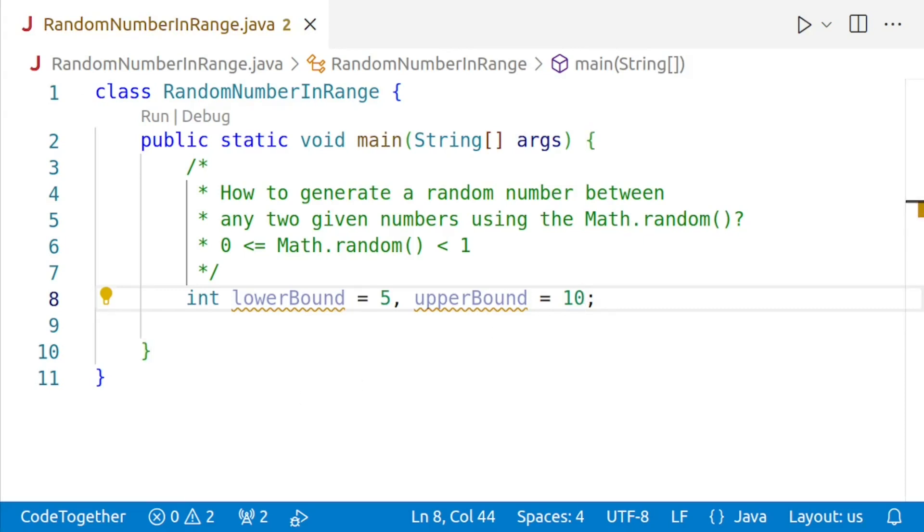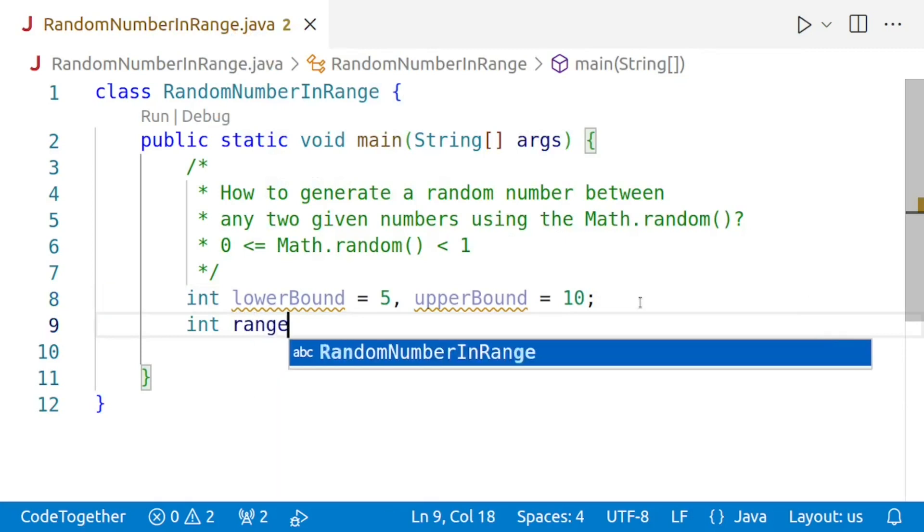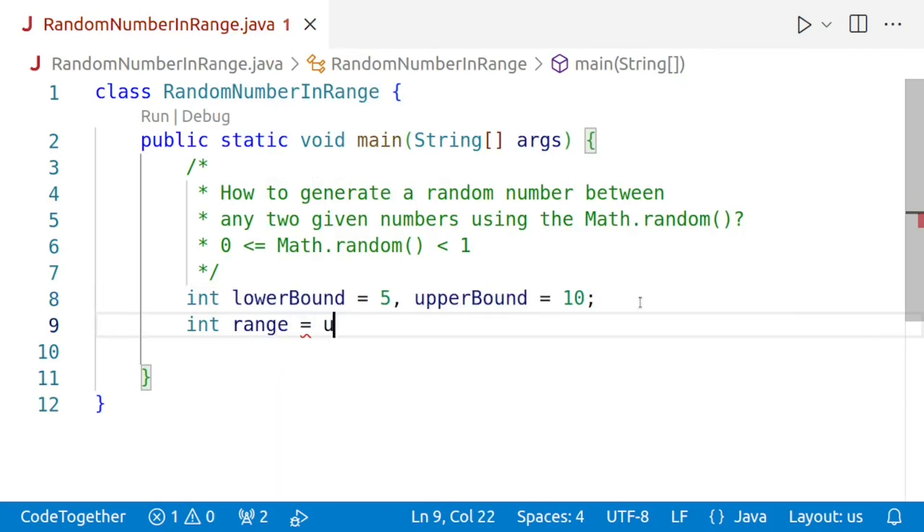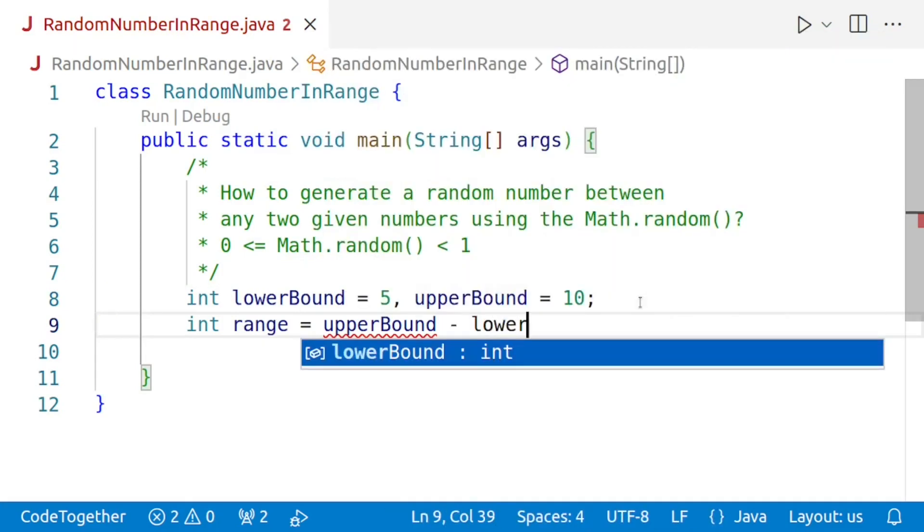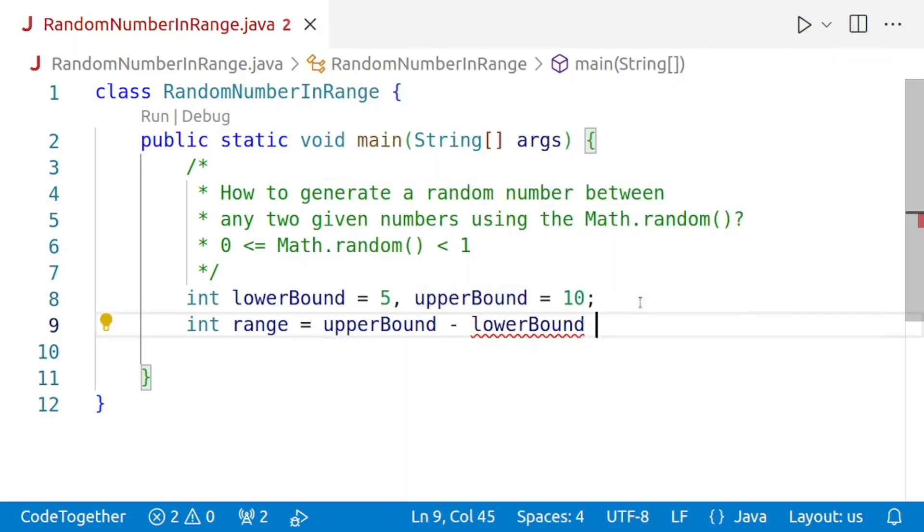Next, we want to determine the range of numbers we want to generate a random number between. That is, I'll say int range is equal to upper bound minus lower bound plus 1. In case you are wondering why we have added 1, that is because we want to include both the lower bound and the upper bound in the range and not simply the difference.